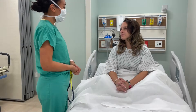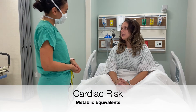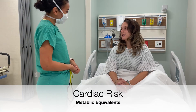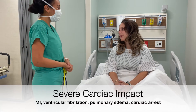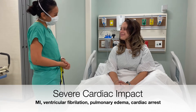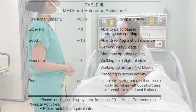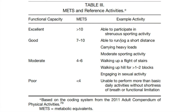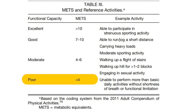Cardiac risk must be independently assessed because of severe impacts, including MI, ventricular fibrillation, pulmonary edema, and even cardiac arrest. Metabolic equivalents, METs, is a quick, reliable tool to assess the likelihood of perioperative morbidity and mortality. A METs score less than 4 means poor functional status, which indicates a need for cardiac evaluation.